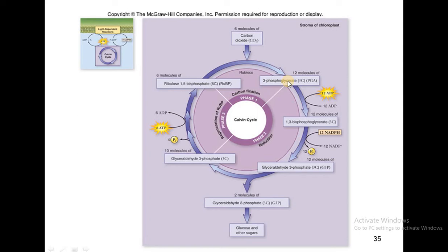During the second phase, 12 molecules of 3-phosphoglycerate are converted into 1,3-bisphosphoglycerate with the help of 3-phosphoglycerate kinase. Here, 12 ATP molecules are utilized. Next, these 12 molecules of 1,3-bisphosphoglycerate are converted into glyceraldehyde 3-phosphate with the help of glyceraldehyde 3-phosphate dehydrogenase, and 12 NADPH are also utilized.